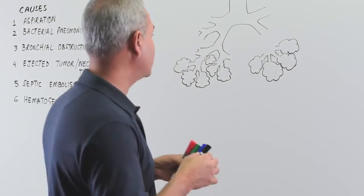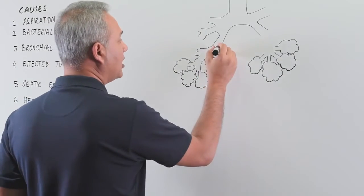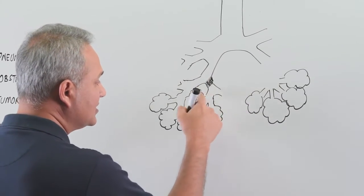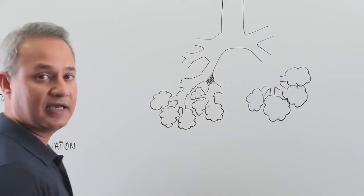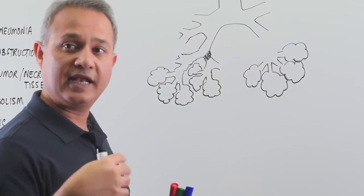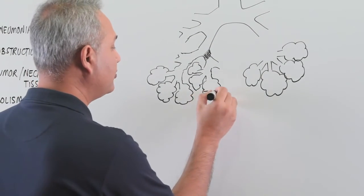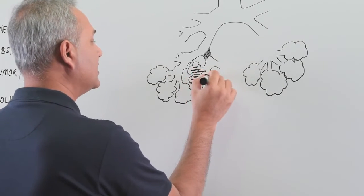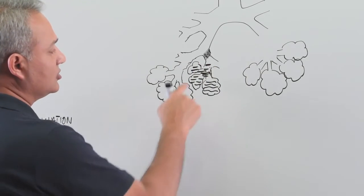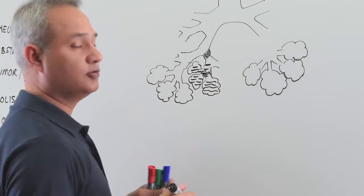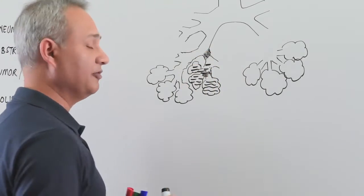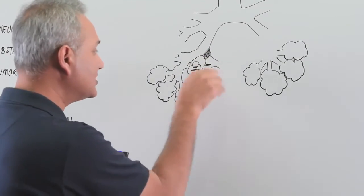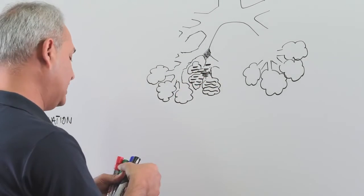Bronchial obstruction is very important. When part of the airway is obstructed, the distal part can become converted into an abscess. The distal part becomes filled with fluid, secondary infections become housed in that area, destruction occurs, and it becomes an abscess — as discussed at length in atelectasis.